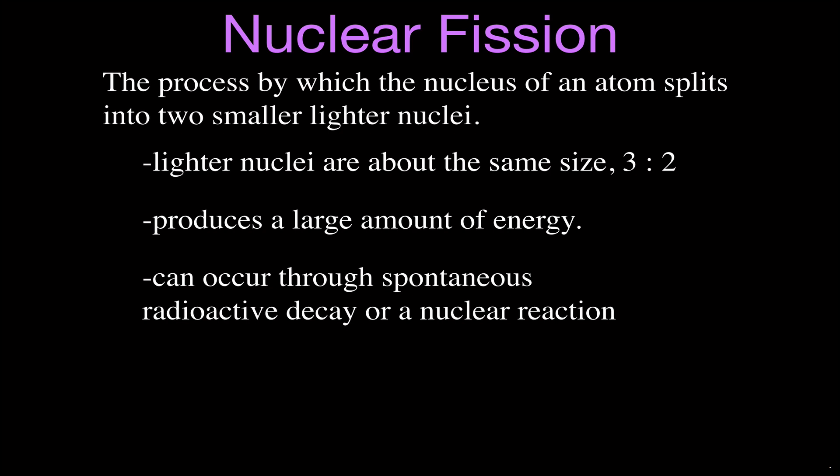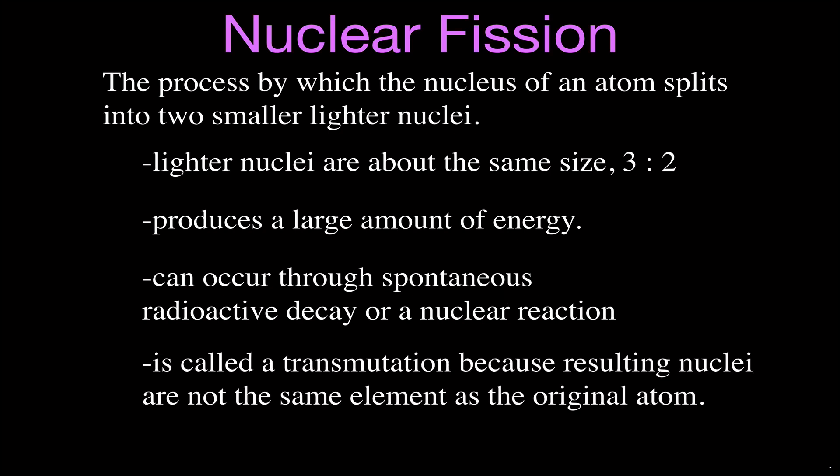This can occur through spontaneous radioactive decay. Uranium-235, for example, will spontaneously decay through alpha decay, which does produce some energy, but the half-life of uranium-235 is like 700 million years, so we can't wait around that long. We actually have to get a nuclear reaction to occur, so we use neutron bombardment. This is also called transmutation because you change the atomic number and the mass number, and you get two different elements from that.